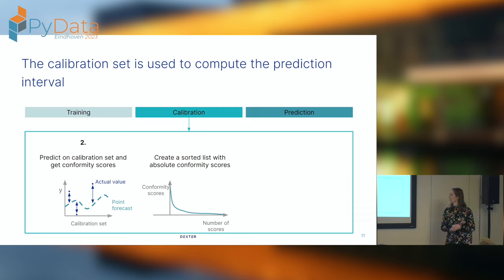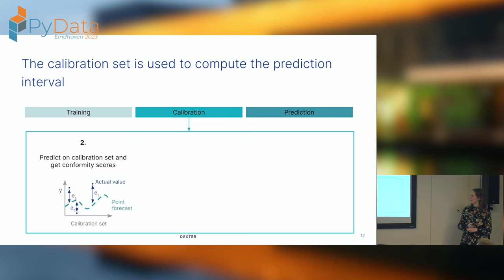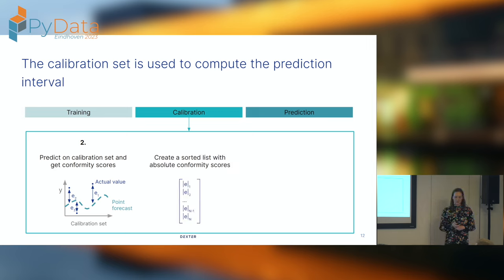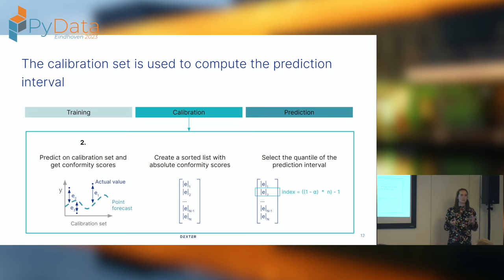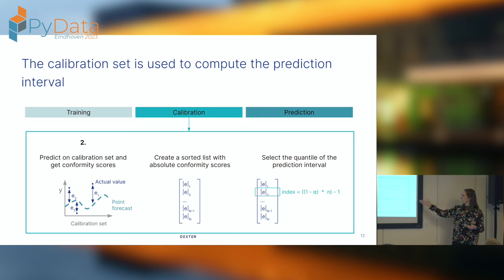You create a sorted list of the absolute conformity scores and select the specific quantile you're interested in. Here I gave it some names: the biggest error is number one, the smallest is number three. It's just an array of absolute values starting with the biggest. You select the quantile of interest — for example, a 90% or 40% interval depending on your question. The formula is: index = (1 - confidence_level) * len(list) - 1 in Python since we count from zero. That value you keep for when you make your prediction.